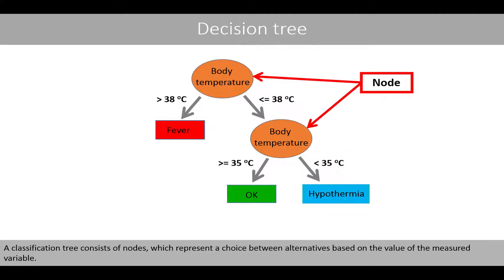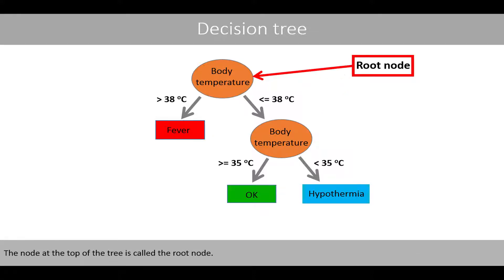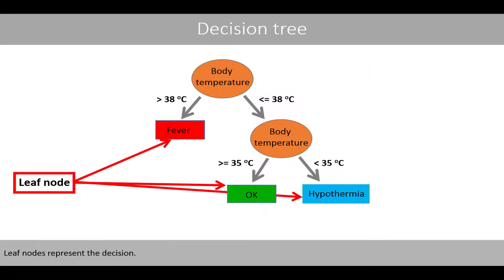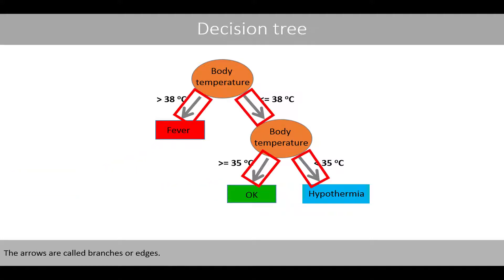A classification tree consists of nodes, which represent the choice between alternatives based on the value of the measured variable. The node at the top of the tree is called the root node. Leaf nodes represent the decision. The arrows are called branches or edges.